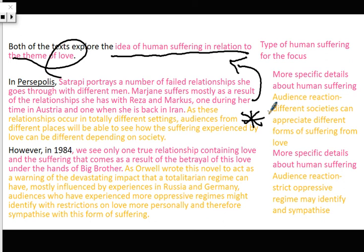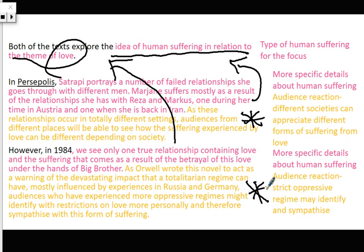We do this again when we go to our 1984 paragraph — we give more detail about the Big Chunky topic. We see only one true relationship containing love and the suffering that comes as a result of the betrayal of this love at the hands of Big Brother. And then we give more detail about the second part of the question: as Orwell wrote this novel to act as a warning for the devastating impact that a totalitarian regime can have — mostly influenced by experiences in Russia and Germany — audiences who have experienced more oppressive regimes might identify with restrictions on love more personally and therefore sympathise with this form of suffering.